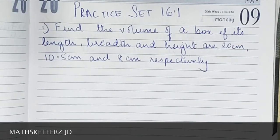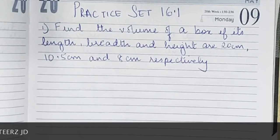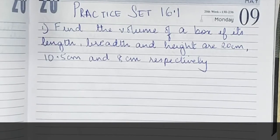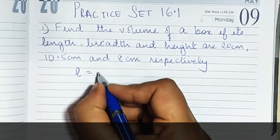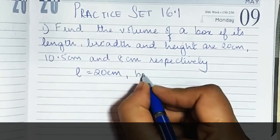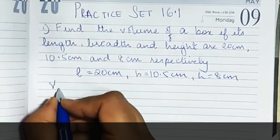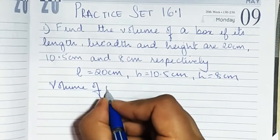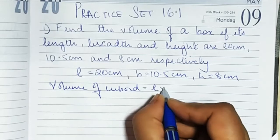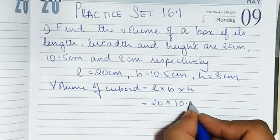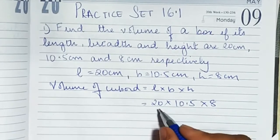To find the volume of a box, there is a formula. The box is in a cuboid shape since its length, breadth, and height are all different measures. Length is 20 centimeters, breadth is 10.5 centimeters, and height is 8 centimeters. The formula for volume of a cuboid is length × breadth × height, so we put 20 × 10.5 × 8.